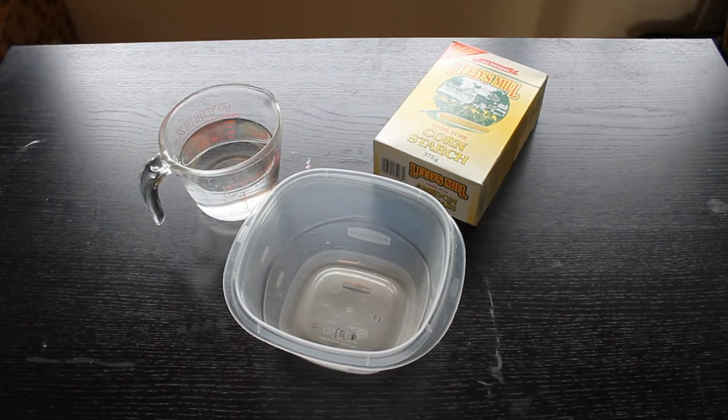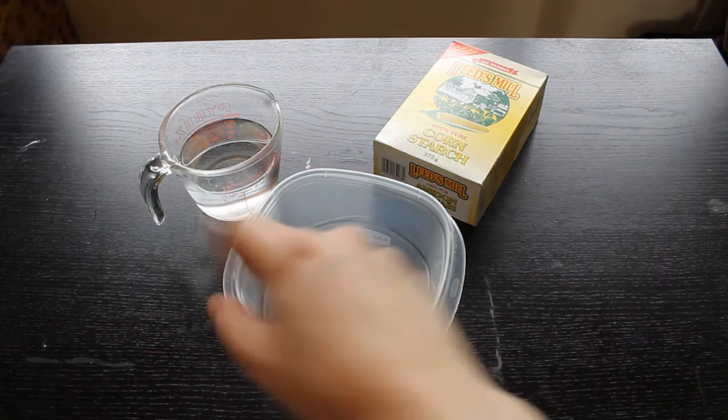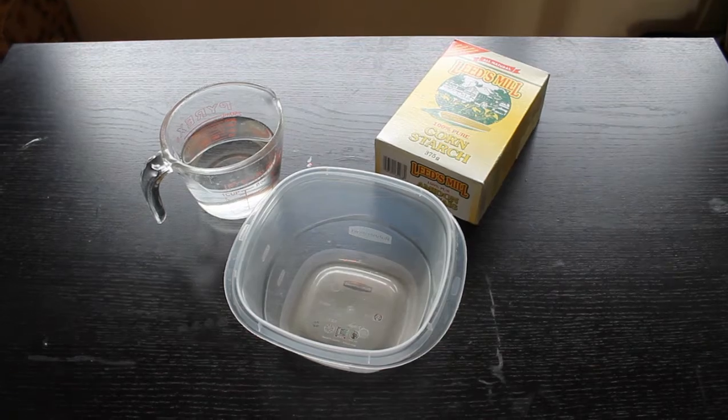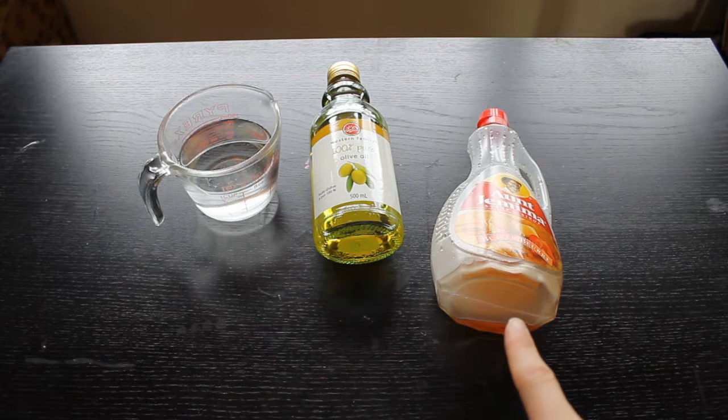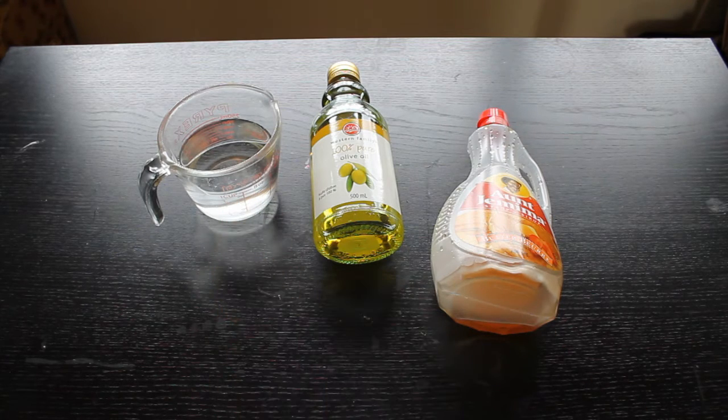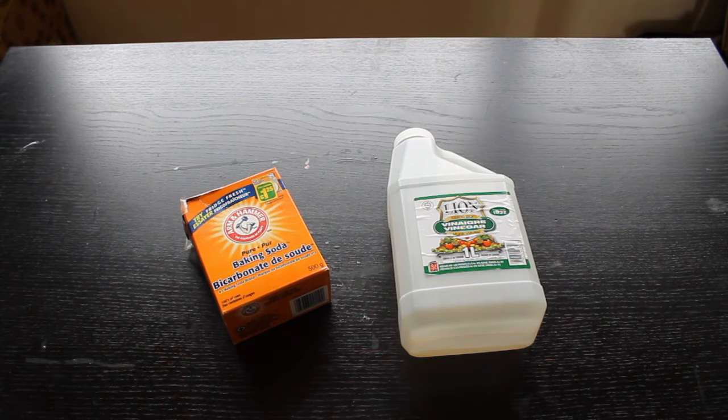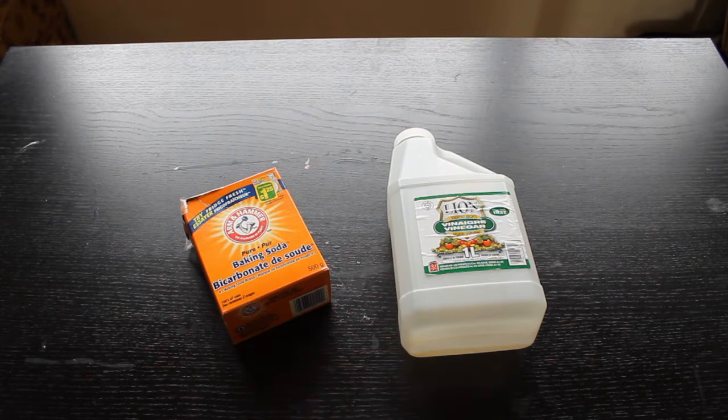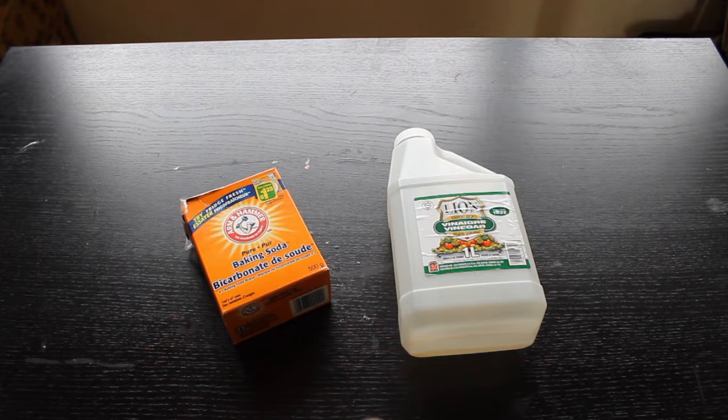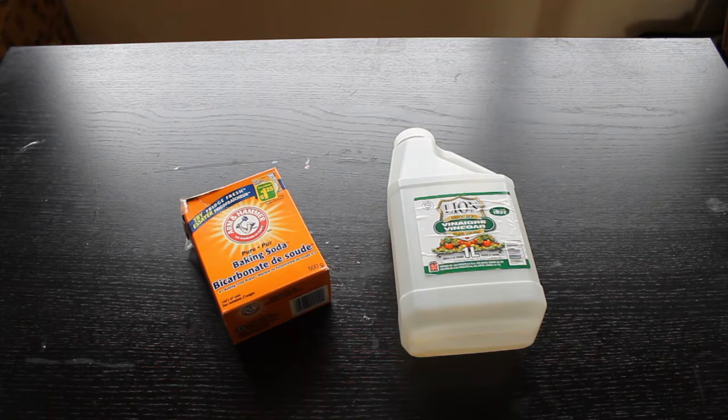For the first experiment you are going to need a bowl, some corn starch, and some water. For our second experiment you are going to need some oil, some syrup, and some water. For our third experiment you are going to need some vinegar, some baking soda, and then something to put them in. And be careful because this experiment can get a little bit messy so you might want to do it outside.